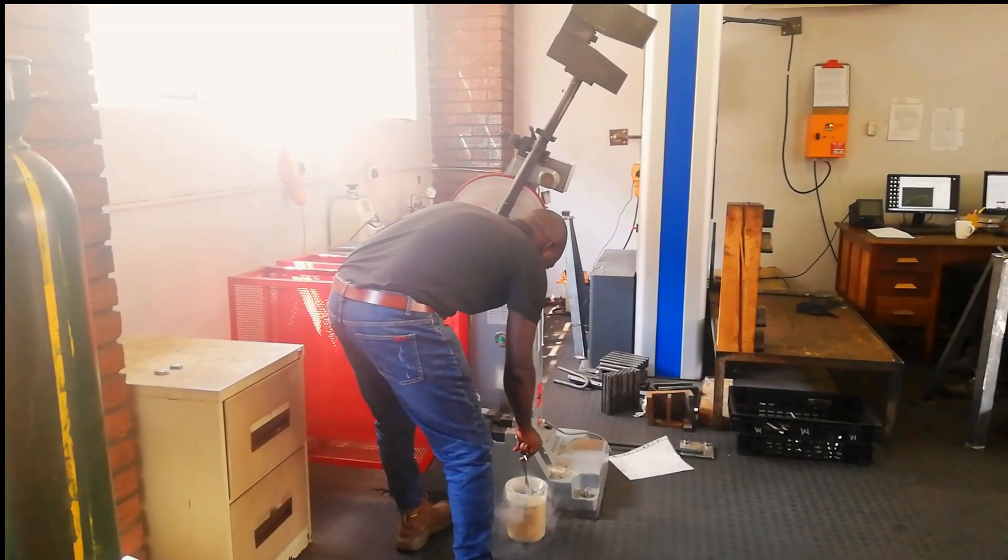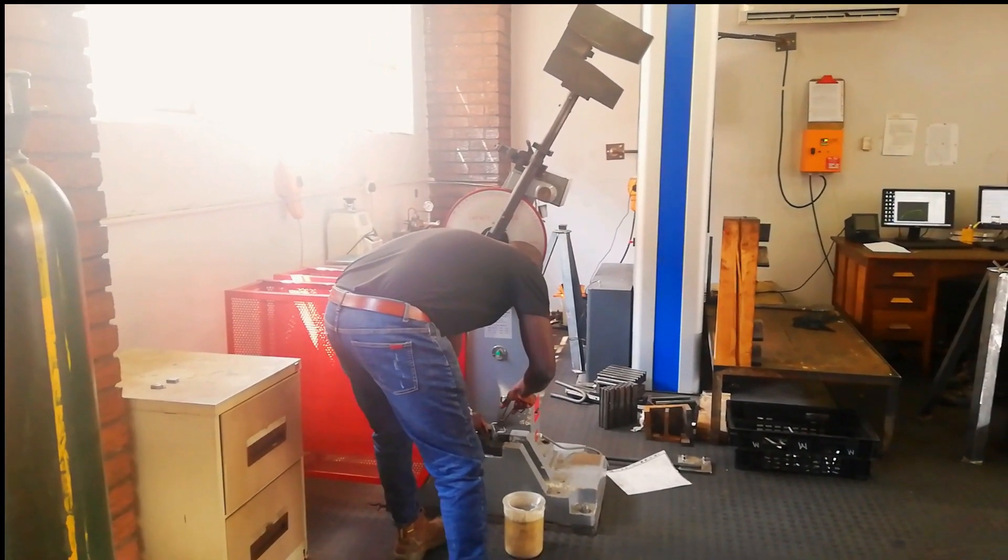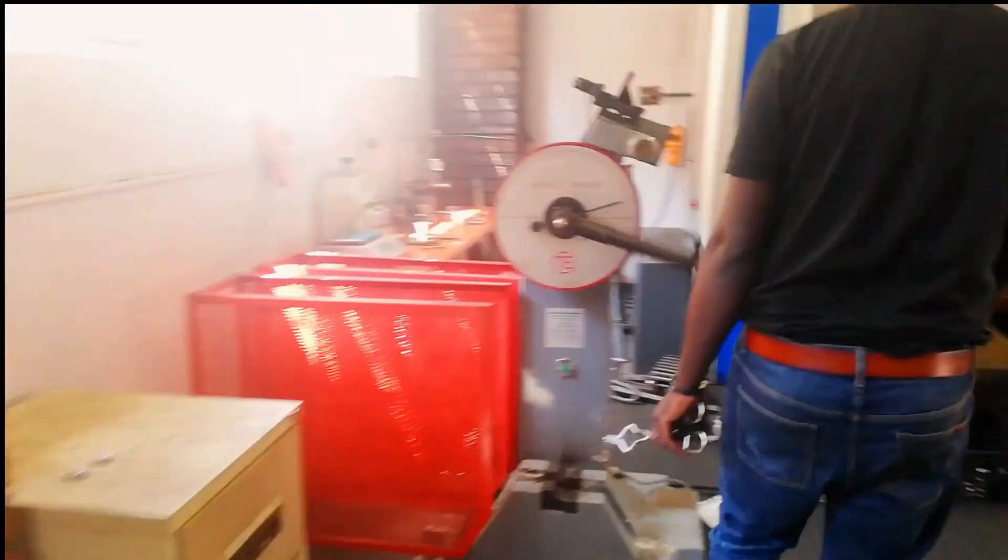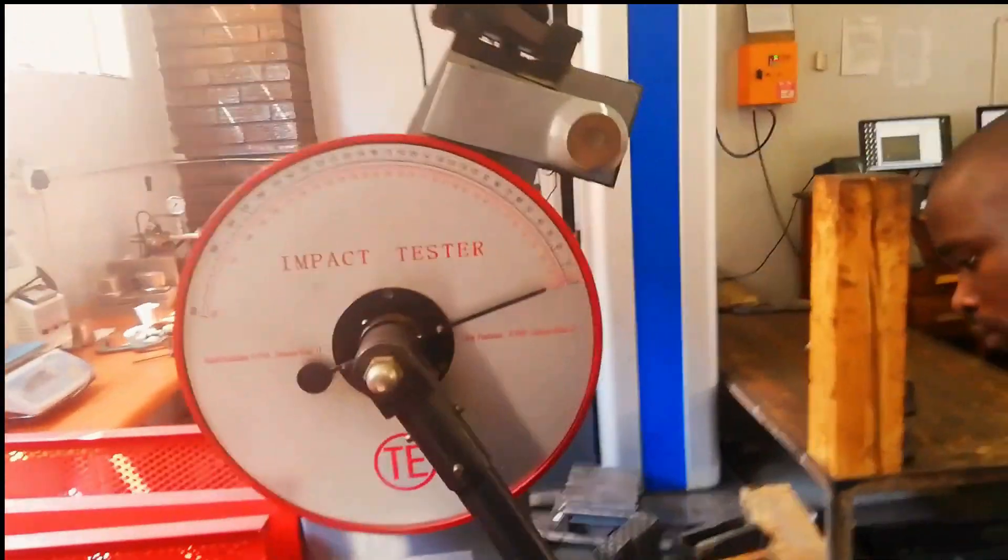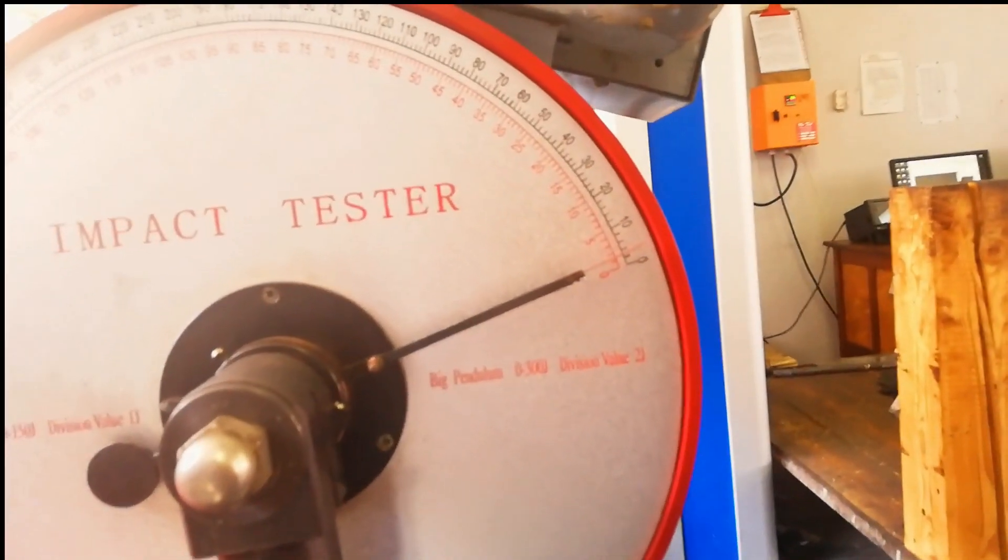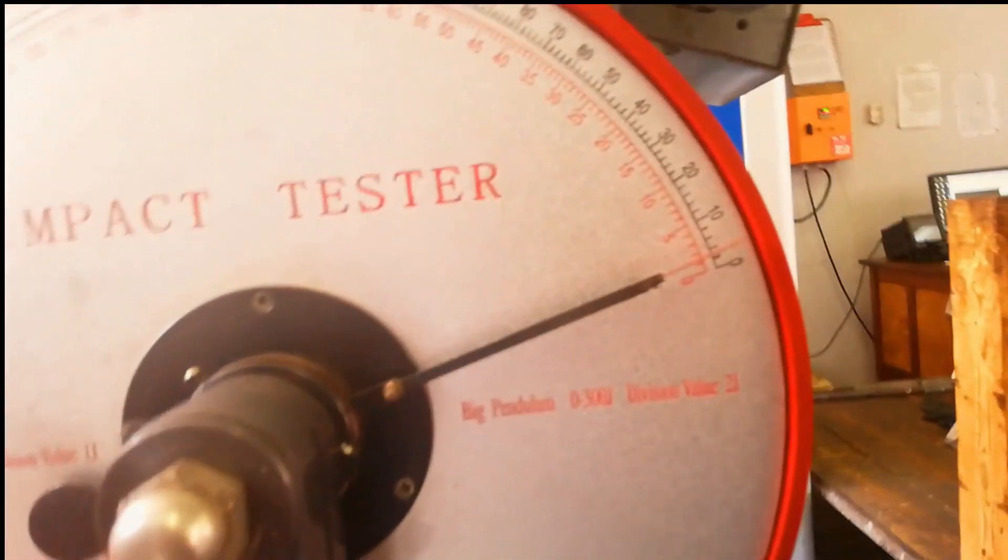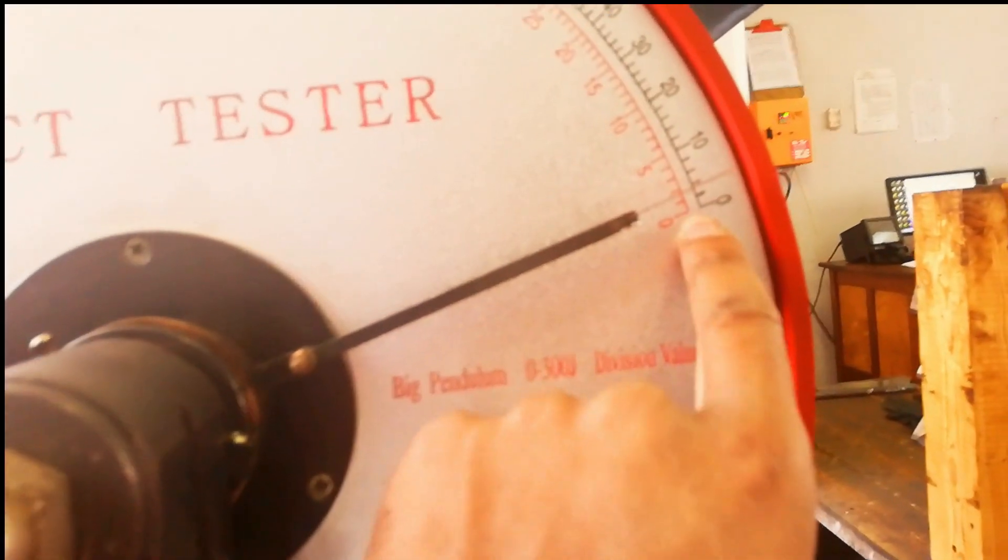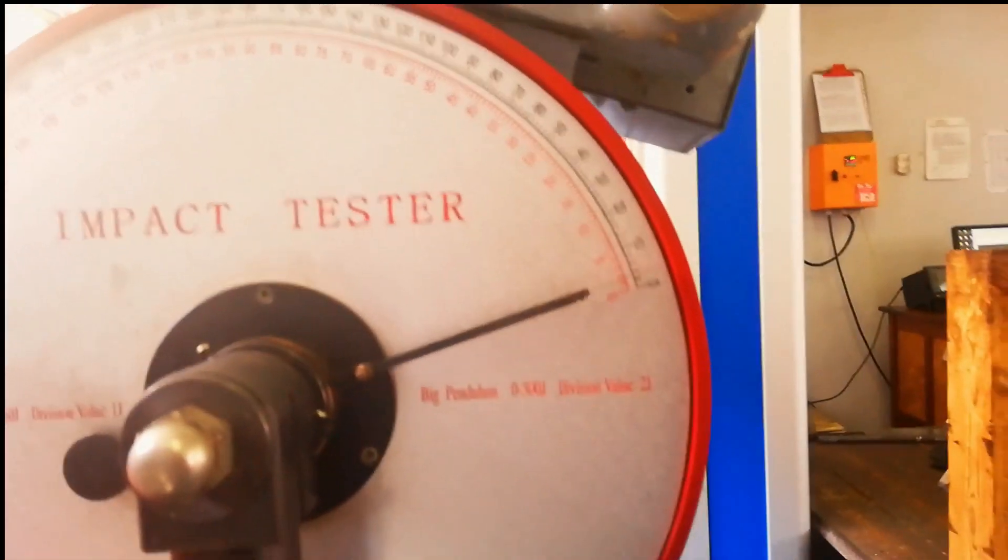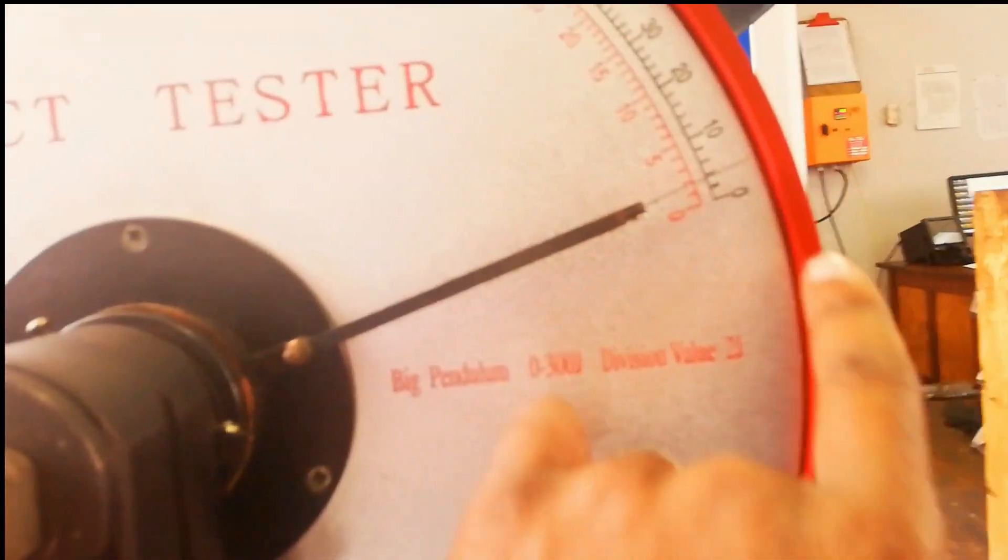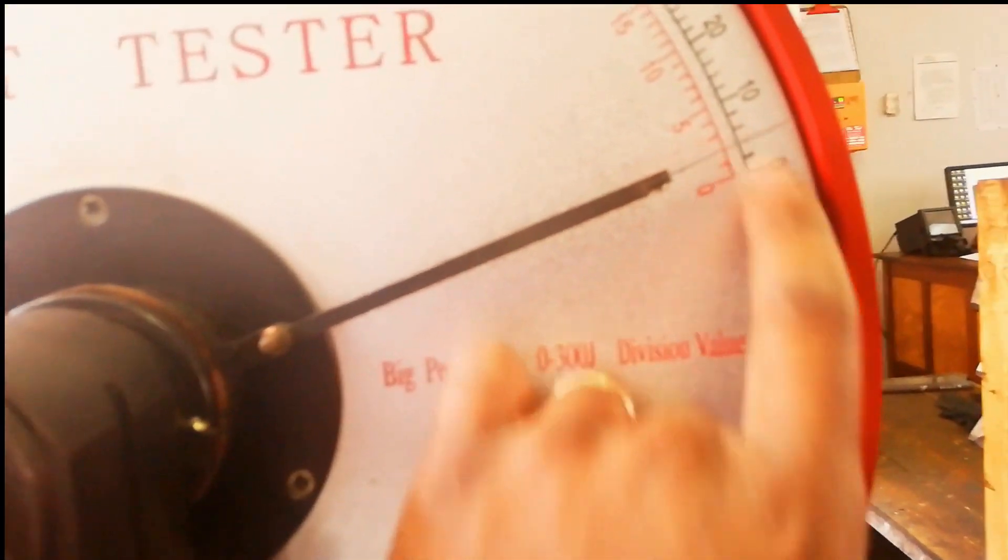And this is our last sample. So you can see, the lower you go in temperature, the lower result you get in terms of joules. Check the reading. So this was very fragile because of the temperature that was dropped. So it's now reading 4 joules, 0 to 4 joules.